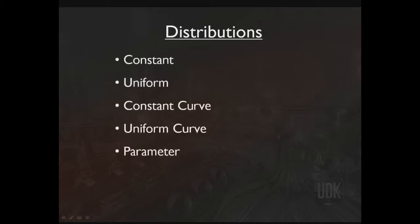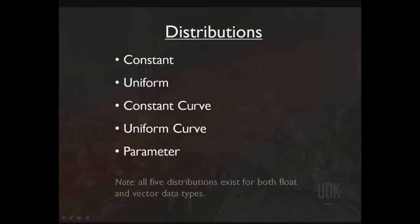Let's talk about distributions. A distribution is just a way to handle numbers. There are five types of distribution available: constants, uniforms, constant curves, uniform curves, and parameters. You should note that all five of these distribution types exist for both float and vector data types. So in the end you'll have a float constant, a float uniform, a float constant curve, and so on. A constant distribution provides a single number that does not change over time — for example, 13.7, which could be positive or negative. For a vector, it would be a value for X, Y, and Z independently.